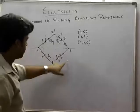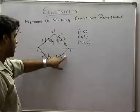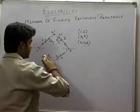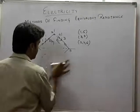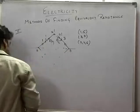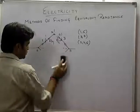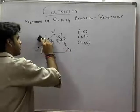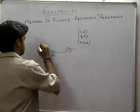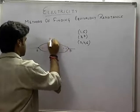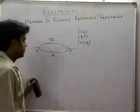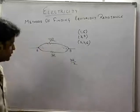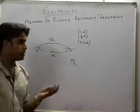Ab ye saari series mein ho gi: R by 2, R, R by 2 — ye total kitni hogi? 3R. Is total ko mein calculate karta hoon — 3R. Similarly, upar bhi 3R. Thik hai, similarly, R net will be 3R by 2. Dekho kitna simple ho gata hai is method se!